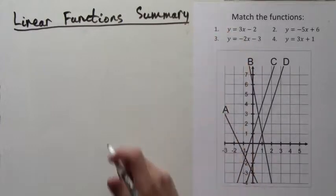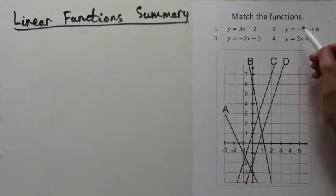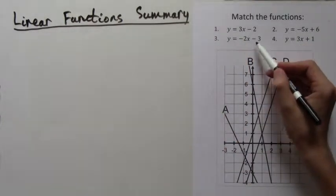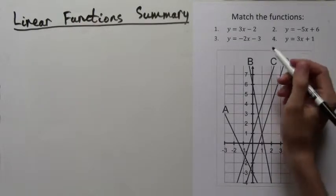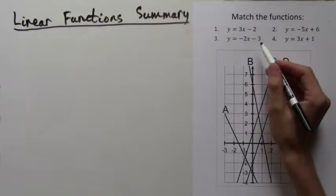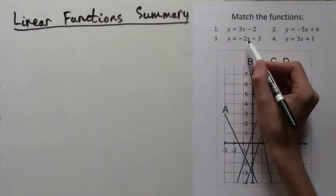Above, we have numbered 1 through 4 are formulas, and below, lettered A through D, are the lines. Now first, let's take a look at the slopes in the formulas.